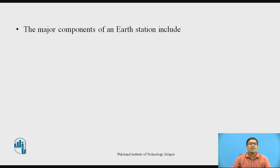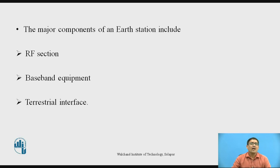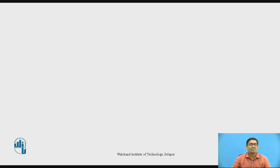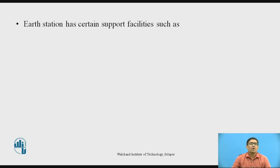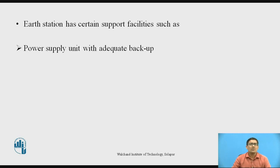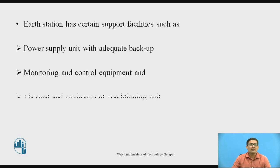The major components of an Earth Station include the RF section, baseband equipment, and the terrestrial interface. The Earth Station also has support facilities such as a power supply unit with adequate backup, monitoring and control equipment, and a thermal and environmental conditioning unit.